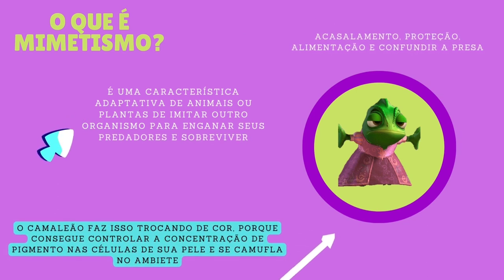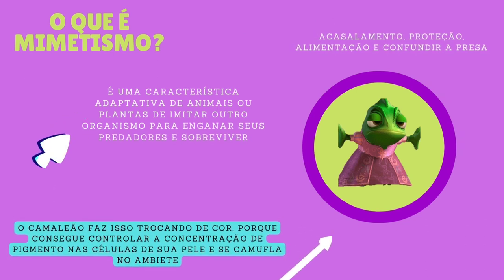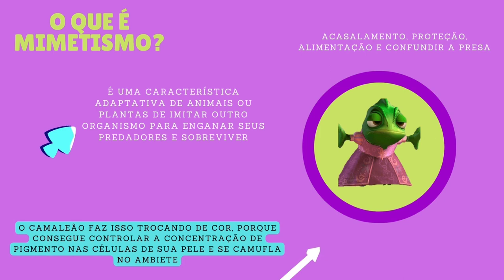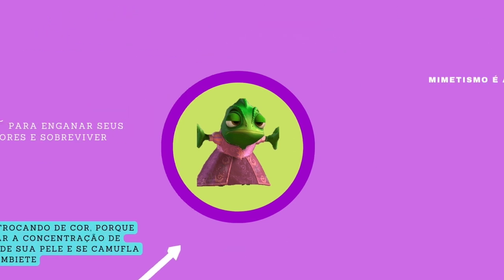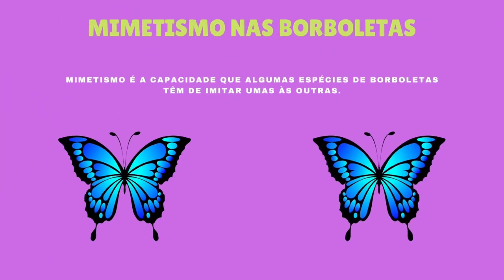Mimetismo é uma maneira que animais e plantas encontraram ao longo de sua evolução de enganar seus predadores. Teoricamente explicando e trazendo brevemente o exemplo que utilizaremos no vídeo, mimetismo é a capacidade que algumas espécies de borboletas tendem a imitar umas às outras.